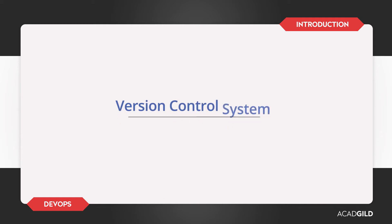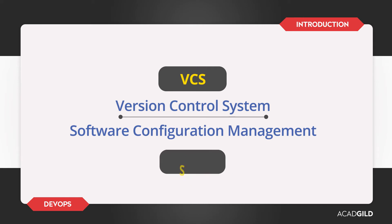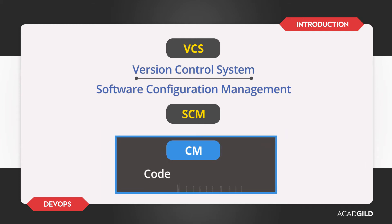Version Control System is also known as Software Configuration Management System. Sometimes people make a mistake by calling Software Configuration Management as Configuration Management. But in DevOps it imparts a different meaning, as Configuration Management refers to Infrastructure as a Code Management or System Configuration Management. Hence, it is always better to refer to Version Control System as either VCS or SCM systems.